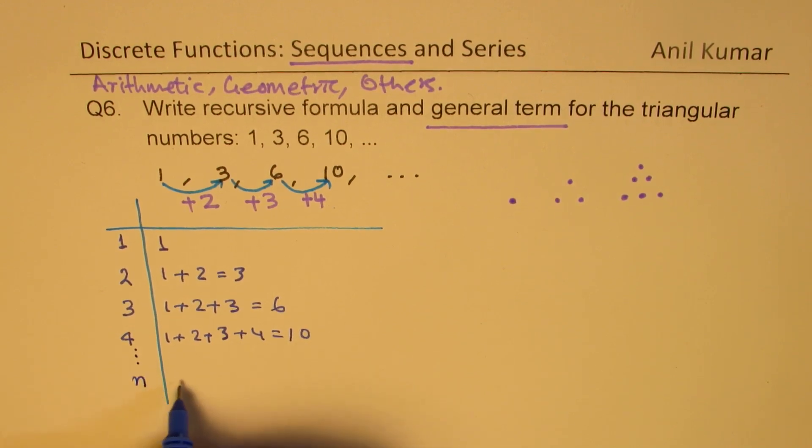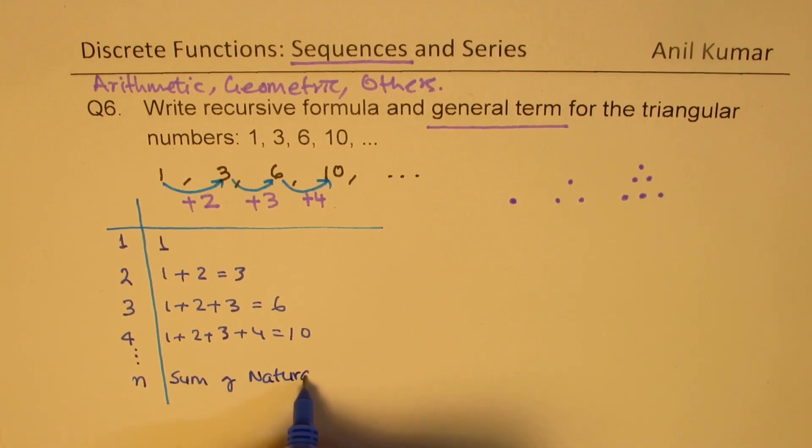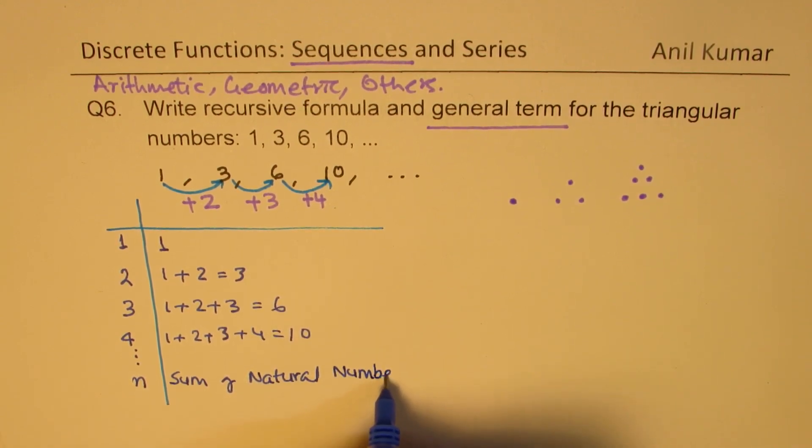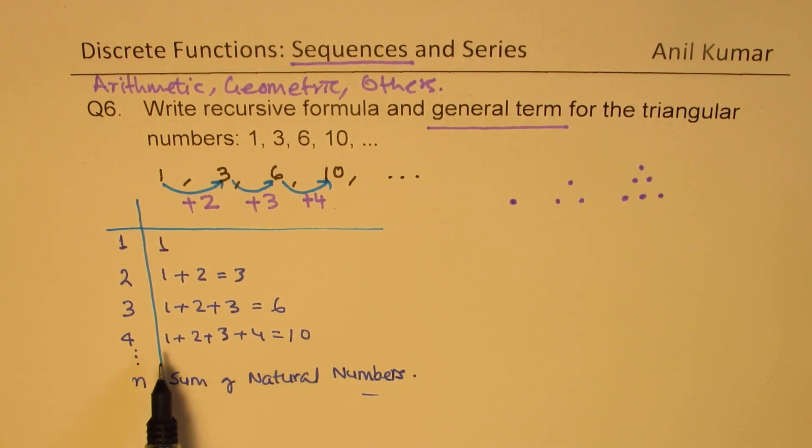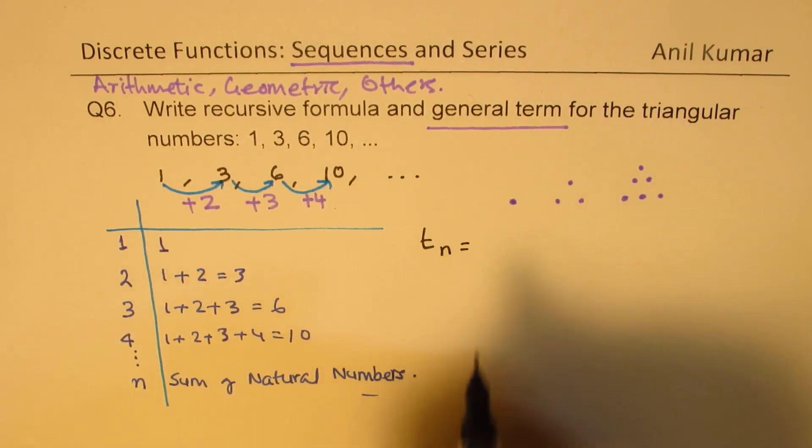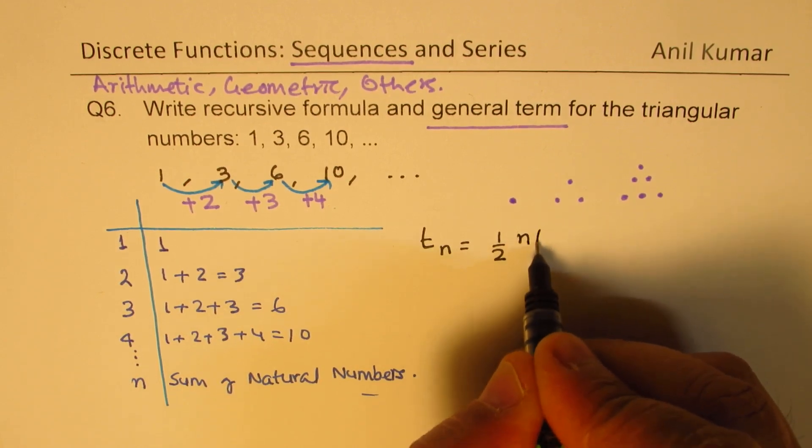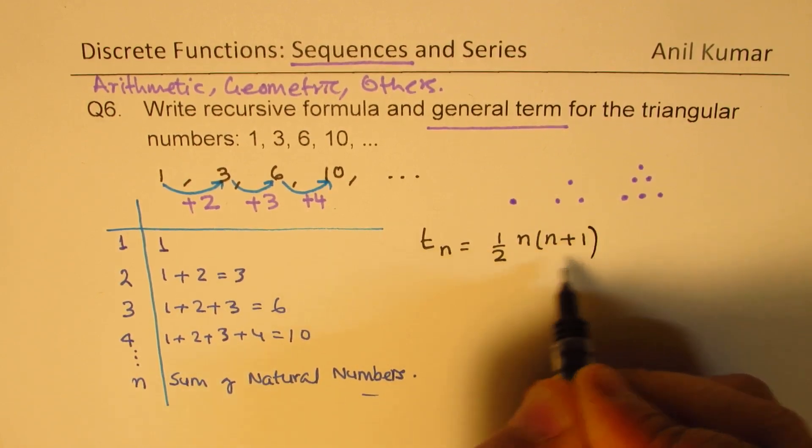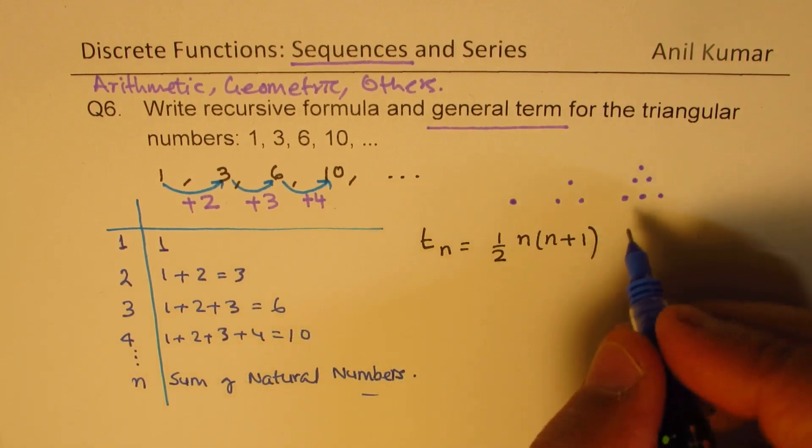As you move, the nth number will be sum of natural numbers. So that should give you the formula. The formula: if there are four numbers you get 10, when you multiply the two numbers n which is 4 times 5 divided by 2. So the general term here, tn, will be equal to half of n times n + 1, which basically is the formula for sum of natural numbers.